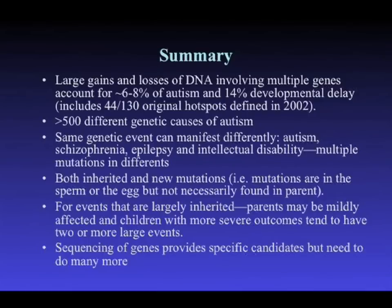Keep in mind that the same genetic event — at least as measured by CNVs — can manifest very differently. The 15q13.3 microdeletion accounts for 1% of idiopathic generalized epilepsy, 0.3% of developmental delay, about 0.2% of autism, and 0.2% of schizophrenia. Both inherited and new mutations are important, but the key take-home is that it's the type of mutation that matters. Disruptive gene-killing mutations — those that take out an entire copy of a gene, alter dosage significantly, or create a stop codon — are probably the most important for neuropsychiatric diseases and developmental delay.